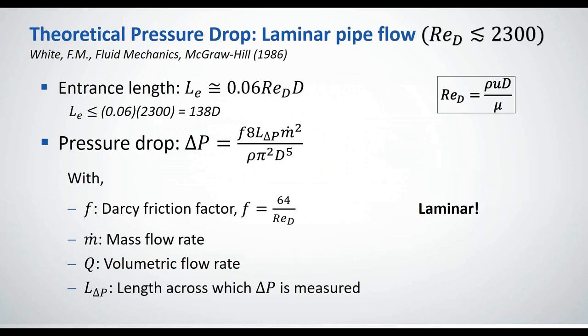So getting into the real theoretical stuff, we take our theories from Frank White's book. This is one of those classics that I'm sure all of you know from university. So here are the equations for laminar pipe flow. This slide is really just for reference. It's not going to go over all the equations, but what we need to know is that there's a theoretical expression for finding the entrance length, which is L_E in this case. And for laminar flow, that is given here by 0.06 times the Reynolds number times the diameter.